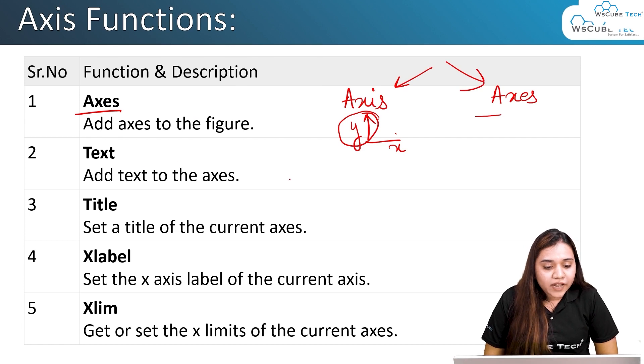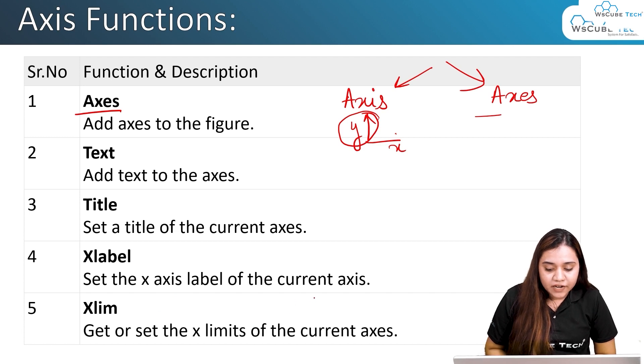Next is text. If you want to add text to the axes, you can use the text function. Title is used to give the title to your axes and the graph. xlabel gives the label to your x-axis, and xlim gives you the limit of the current axis.